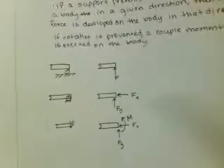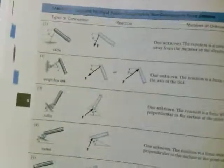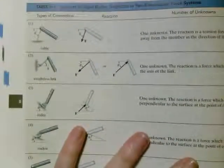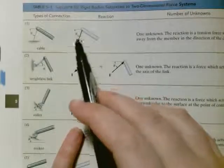So table 5-1 in the book has a bunch of examples. So you've got things like a cable, which is only going to be able to have one force.